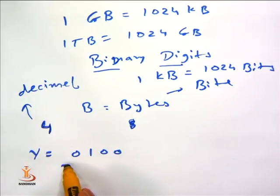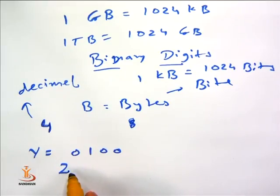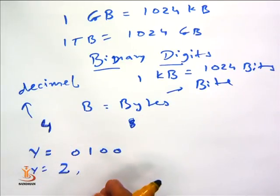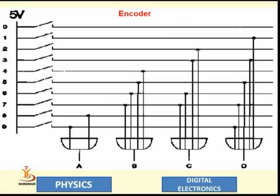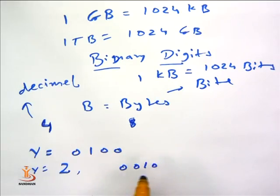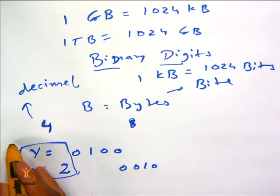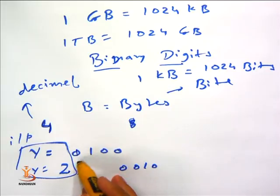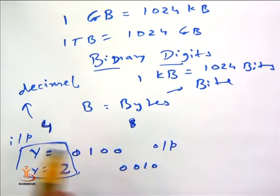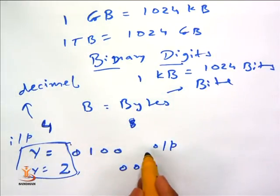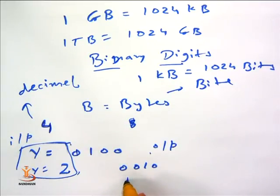If we connect the second socket of this input, the answer by pressing this second number key will be 0 0 0 1 0 0. On the left side, all these are the inputs and on the right side we have outputs. So ultimately we can say that the decimal system is converted to binary system, and this is achieved by encoder.